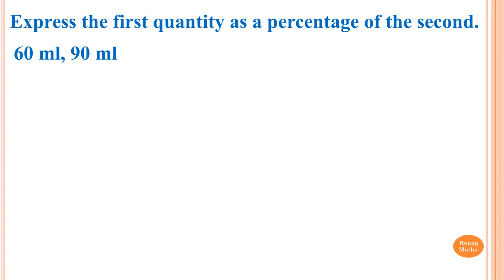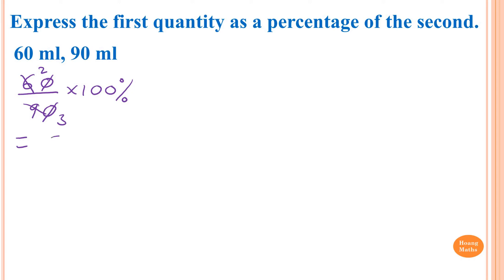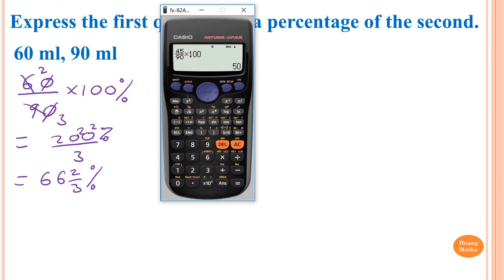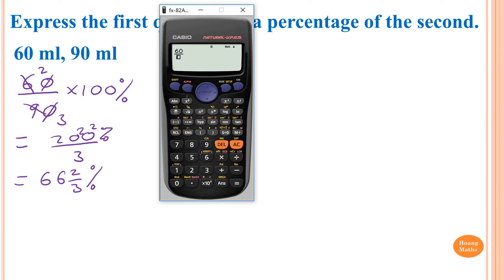Express the first quantity as a percentage of the second: 60 milliliters and 90 milliliters. All we need to do is 60 over 90 times by 100. The zero cancels, and 6 divided by 3 is 2 and 9 divided by 3 is 3, giving 200 over 3. So that's 66 and two-thirds percent. Otherwise just use your calculator: 60 over 90 times by 100.